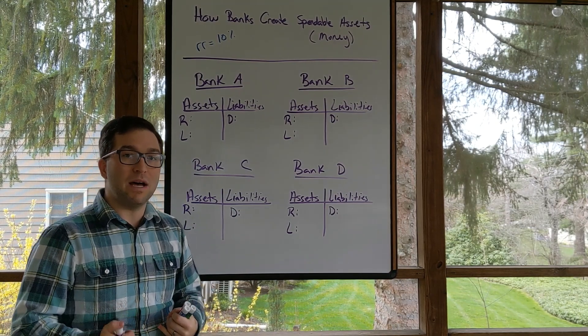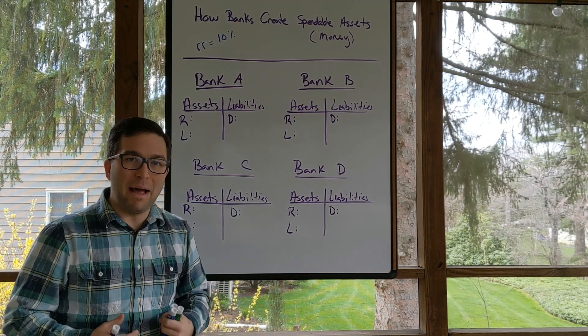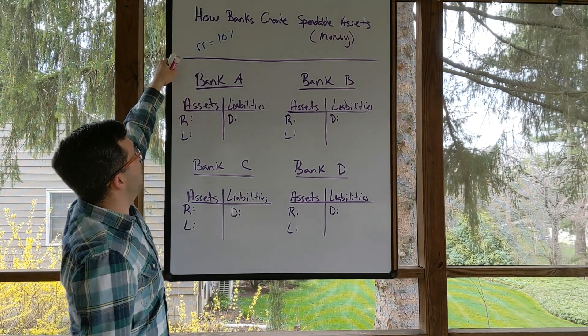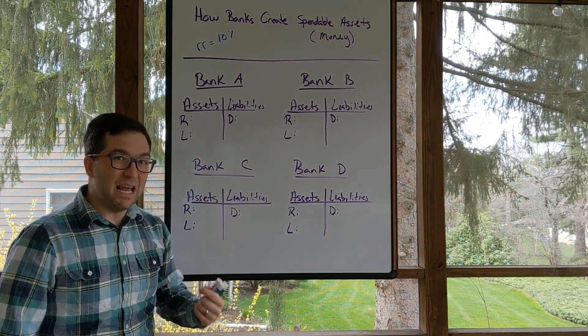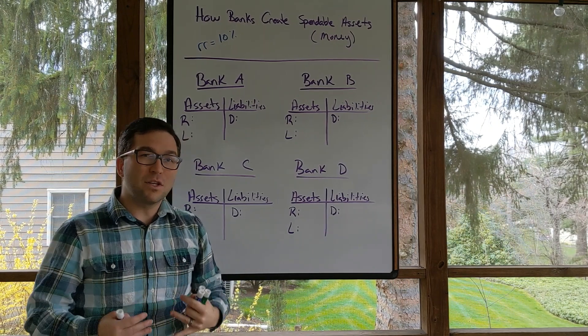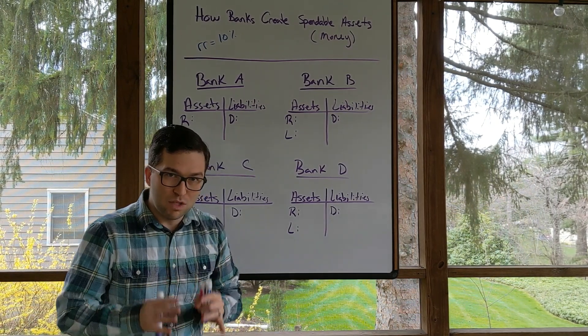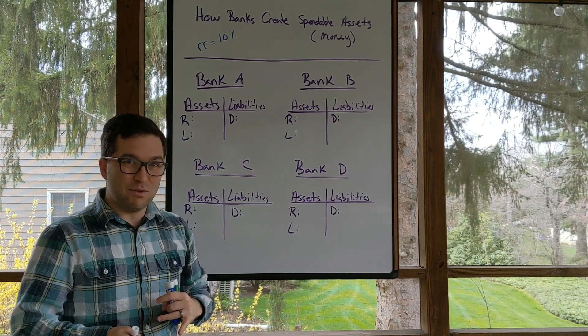We're starting to develop that money multiplier. In this case, it's going to be the simple deposit multiplier because we're going to look at the maximum amount. If we assume that the required reserve ratio is 10% and that banks are only holding the required reserves, not holding any excess reserves,